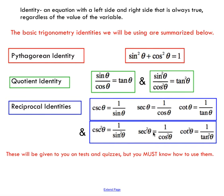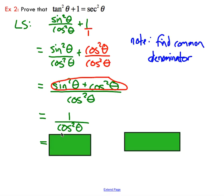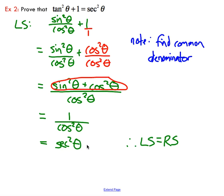So we've got one over cos squared theta. That's going to be secant squared theta. So we can just kind of conclude that our left side does in fact equal our right side because we've simplified this down to a secant squared theta. Awesome example.